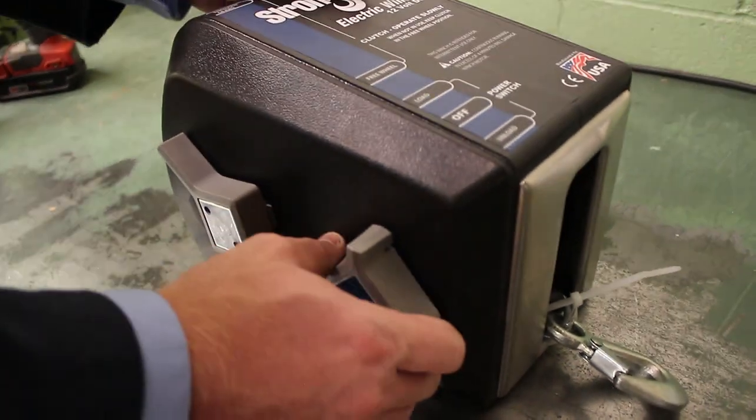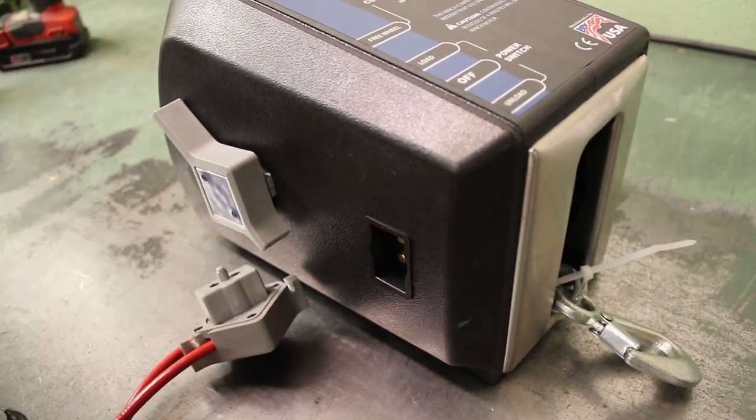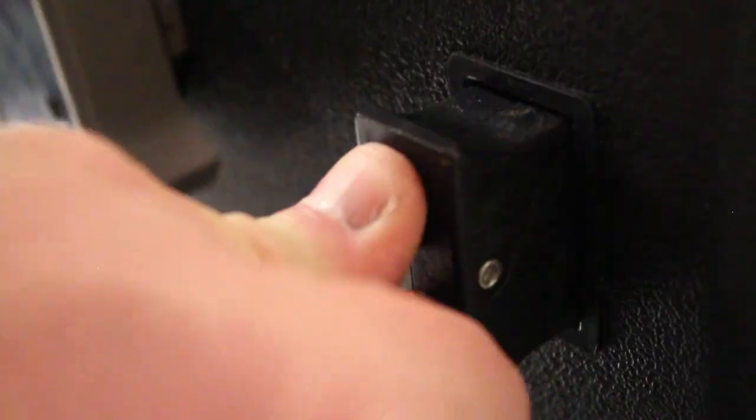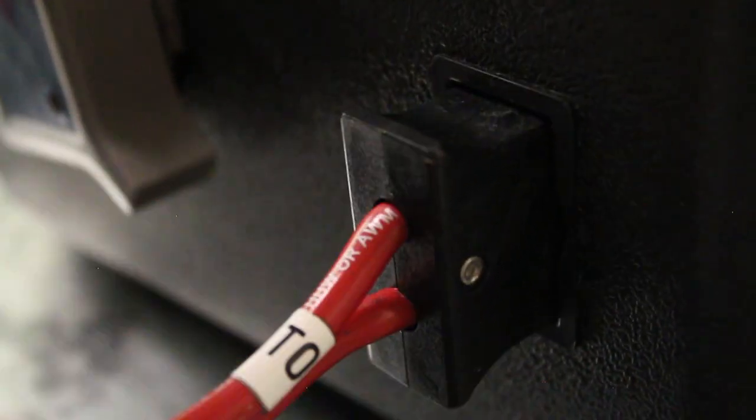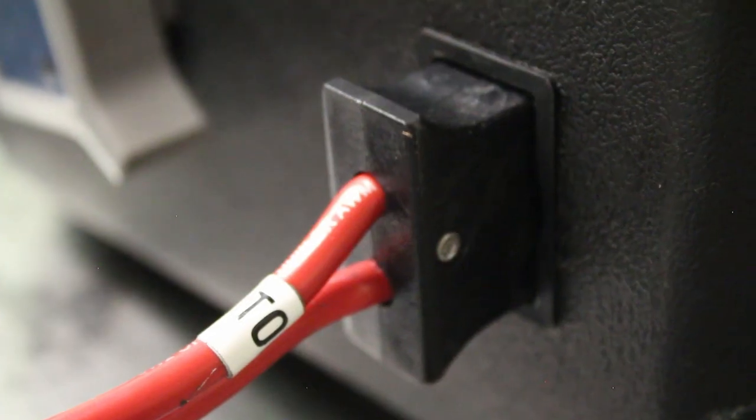Start by pulling the plug of your existing wiring harness out of the side of your winch's cover and replacing it with the black plug from the 6371 kit. Be sure you push the plug in as far as it can go and that the red wire labeled top is installed on top.